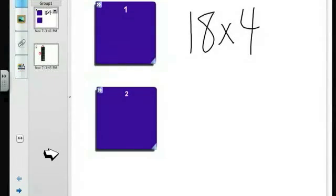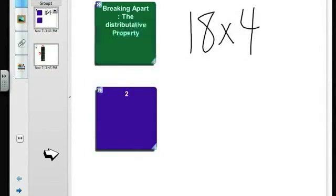Now, one of the ways we've been doing this in the past is what we call breaking apart, otherwise known as the distributive property. What we do is we take a look at one of the numbers in this problem. In this particular case, we are going to go ahead and take a look at the number 18 as the number we're going to break apart.